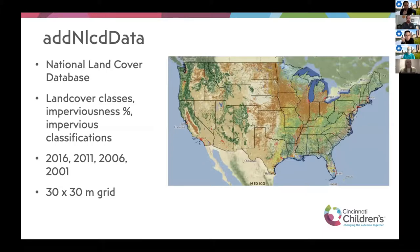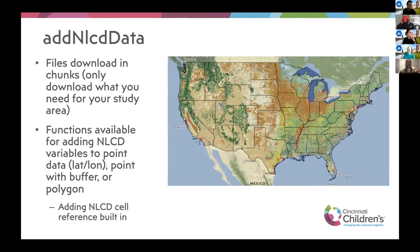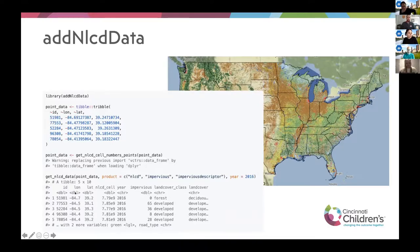Finally, there's a package from the National Land Cover Database. This data is publicly available and you could download it manually, but we're adding helper packages. It contains different land cover classes — whether land is pasture, forest, developed land, etc. — on a 30 by 30 meter grid. This package downloads data in chunks, only downloading the spatial extent you need. It works for the exact point, a buffer radius around that point, or a polygon. The output adds imperviousness, how developed the land is, whether it's forest, and so on.